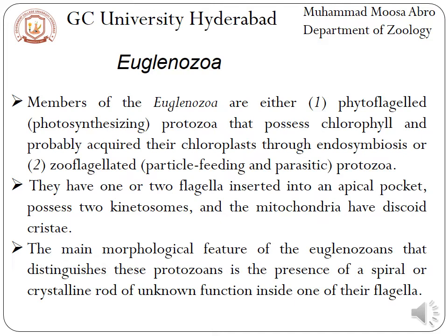The third group of supergroup Excavata is Euglenozoa. Members of Euglenozoa are either phytoflagellates or zooflagellates — these are Euglenozoa's two subgroups.